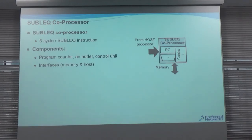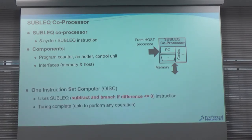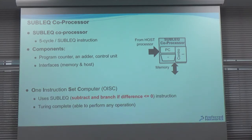The sublet coprocessor has a program counter, a subtractor, and a control unit, plus an interface between the host and memory. We pick this as a one-instruction-set computer (OISC), specifically subtract and branch if the difference is less than zero. It is a Turing-complete instruction, so you can perform any computation using it by adding a sequence of instructions.